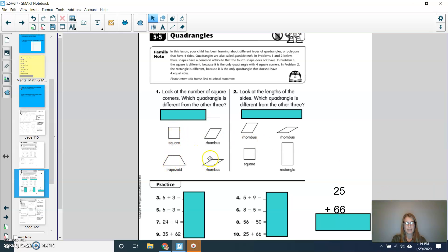And which quadrangle is different from the other three? So look at my amount, look at my angles. Which one seems to be different than the other three? And you should have said square, because notice how the square has those square corners, where the other three, the trapezoid, the rhombus, and the wide rhombus, they do not have square angles.